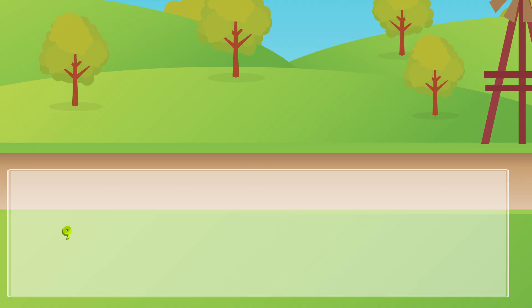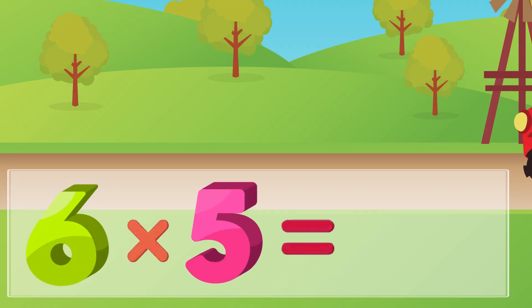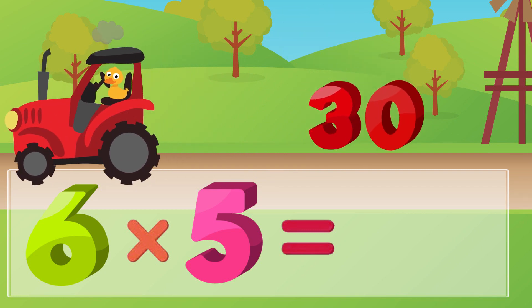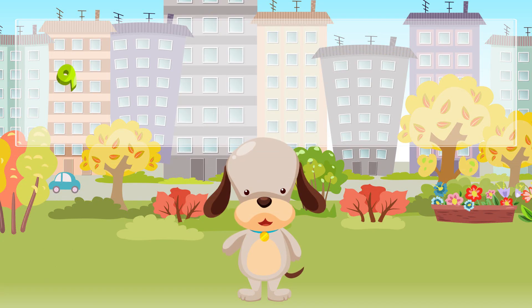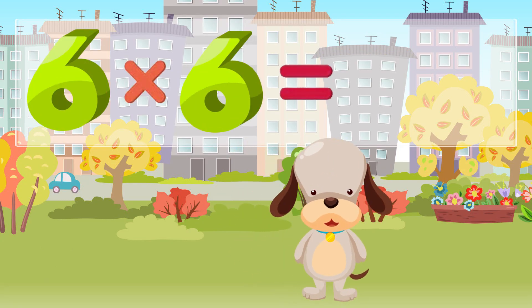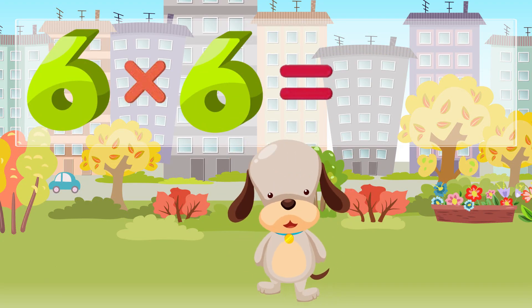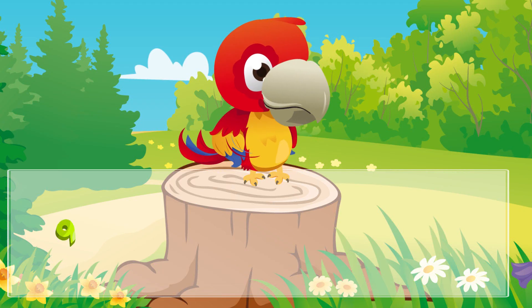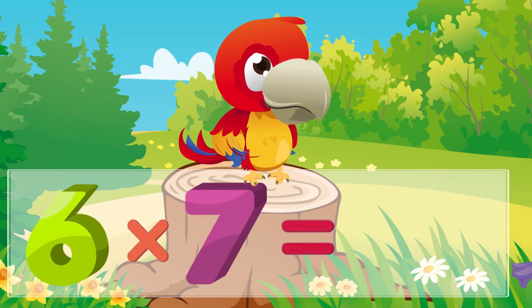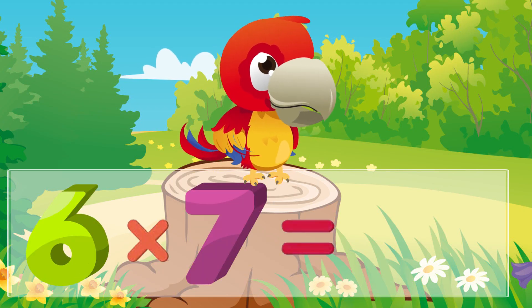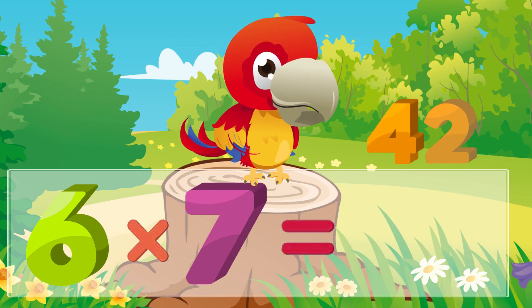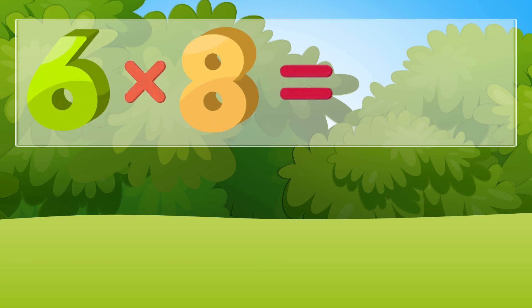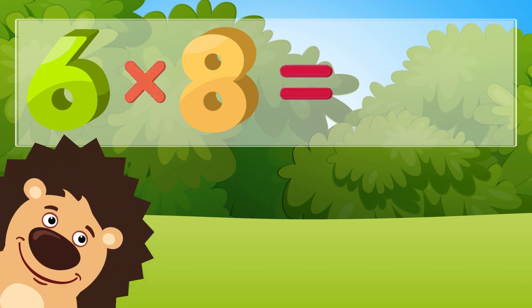Six times five is thirty. Six times six is thirty-six. Six times seven is forty-two. Six times eight is forty-eight.